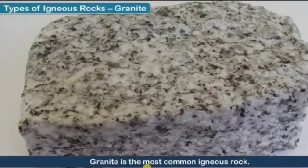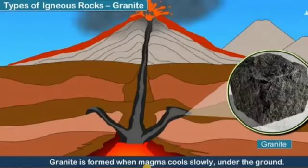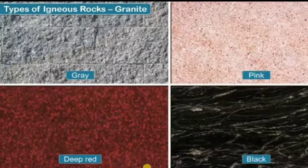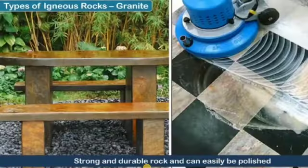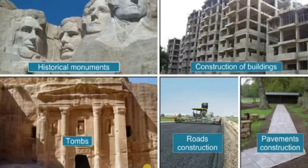Granite is the most common igneous rock and is formed when magma cools slowly under the ground. Granite is found in grey, pink, deep red and black in colour. It has a silvery glitter to it. It is a strong and durable rock and can easily be polished. Granite is seen in historical monuments and tombs, and is also used in construction of buildings, roads and pavements. It is also used for making floors, tiles and kitchen counters.